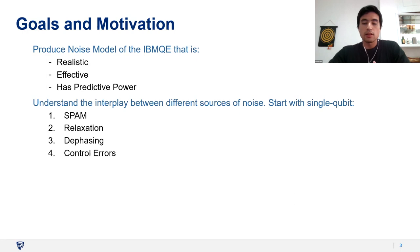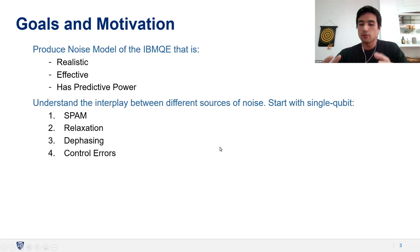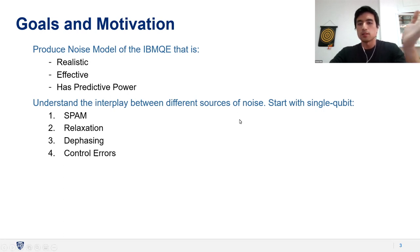The way we structured this model was with specifically four ingredients: SPAM errors, relaxation, dephasing, and control errors. Control errors are particularly convenient in IBM devices because all the native gates are essentially just two types of X rotations. Everything we've modeled and tested so far is on single qubit systems, and we're currently moving forward to two qubit errors.